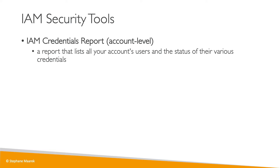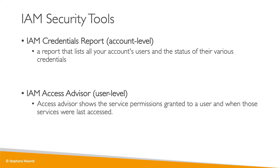The second security tool you can use in IAM is called IAM Access Advisor. This one is at the user level, and the Access Advisor is going to show the service permissions granted to a user and when those services were last accessed. This is very helpful because we've already talked about the principle of least privilege. Using this tool, we're able to see which permissions are not used and reduce the permissions a user has to be in line with that principle of least privilege.